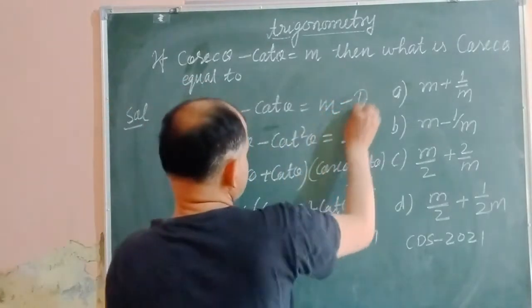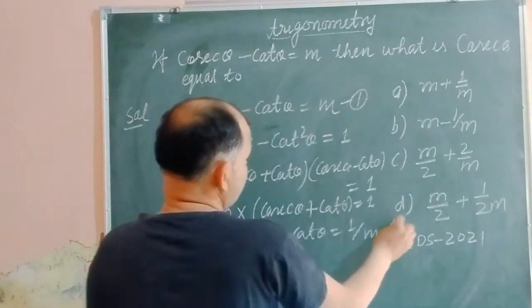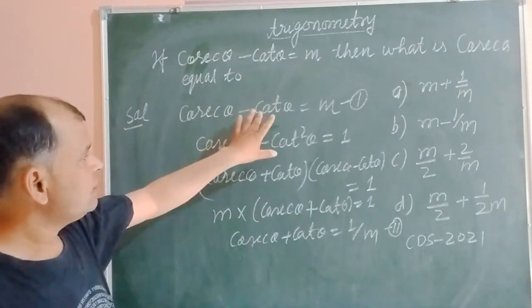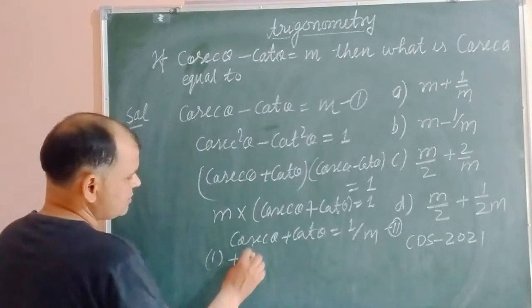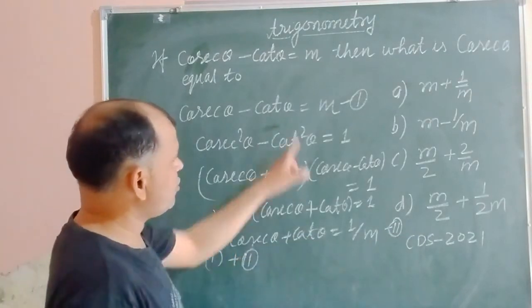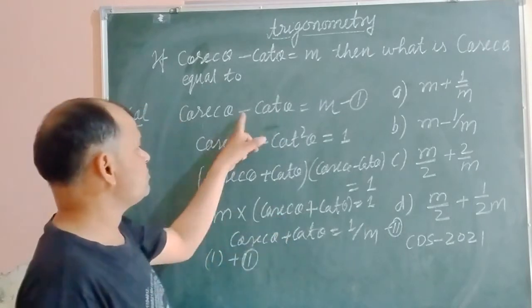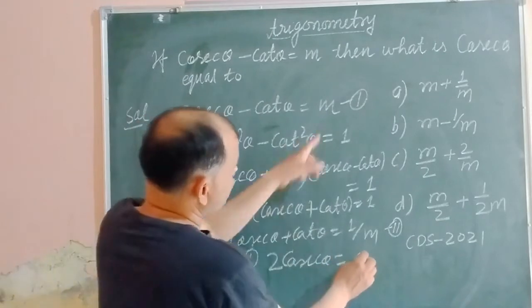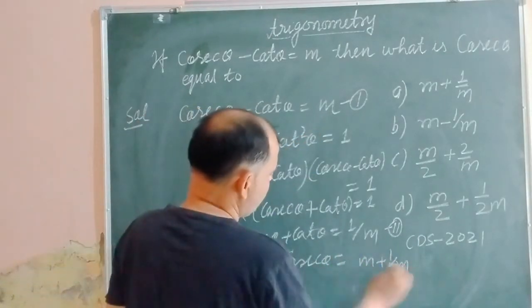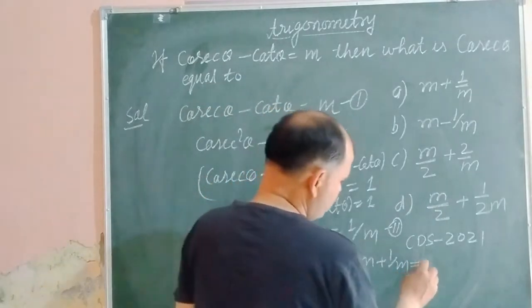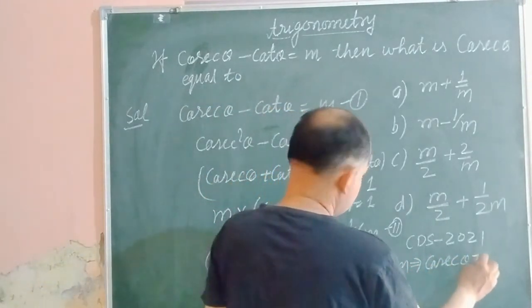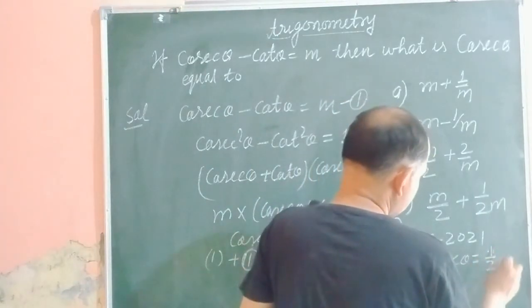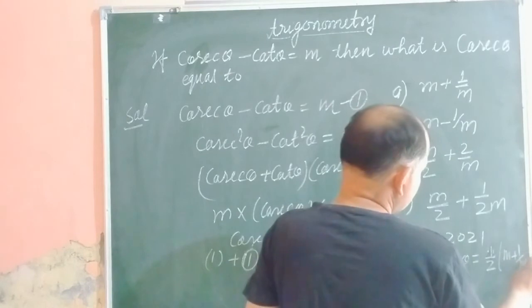By adding these two equations we got the value of cosec theta. Now when we add first plus second, cot theta cancels out, then we get two cosec theta equal to m plus 1 upon m, or cosec theta equal to half of m plus 1 upon m.